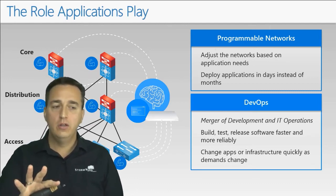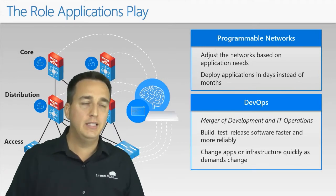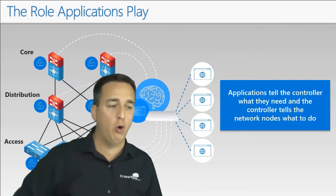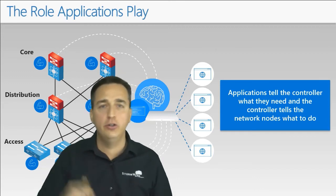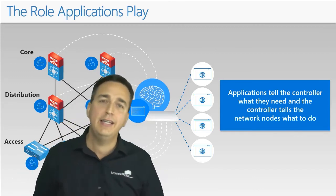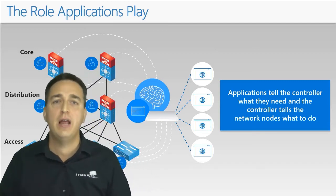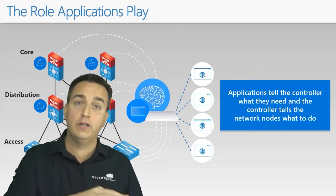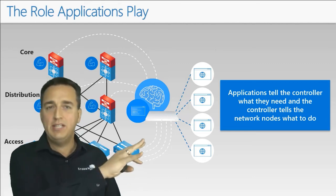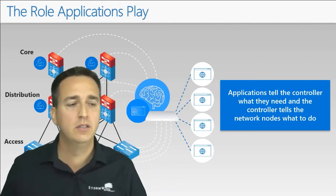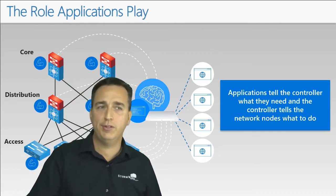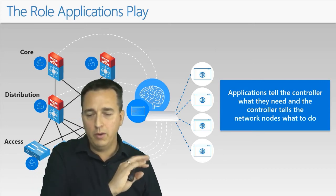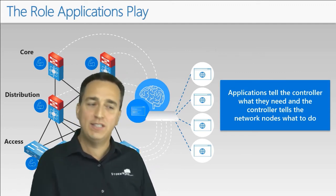True software-defined networking is about allowing those applications to tell the controller what they need, the controller doing its magic, and then distributing the information to the network devices and configuring them as necessary. Apps tell the controller; the controller configures the network. You don't need to take it this far if you don't want to — you may want to start slowly and just worry about the network side of things.